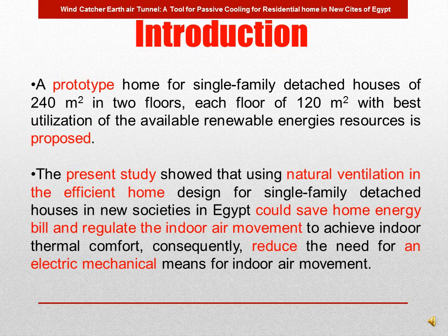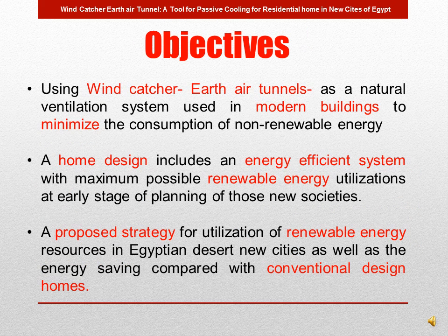This study explores the behavior of using windcatcher and earth air tunnel in designing an energy efficient home with renewable energy utilization during the early planning stage of new societies in Egypt. A prototype home for a single family detached house of 24 square meters in two floors, each floor 100 square meters, is proposed. The main objective is to use windcatcher and earth air tunnel as a natural ventilation system to minimize non-renewable energy consumption, maximizing possible renewable energy utilization at early planning stages.